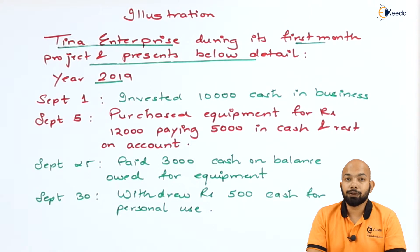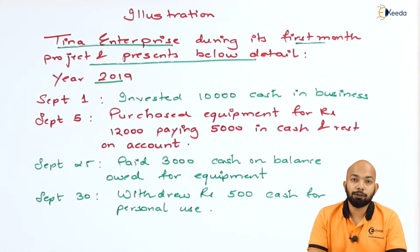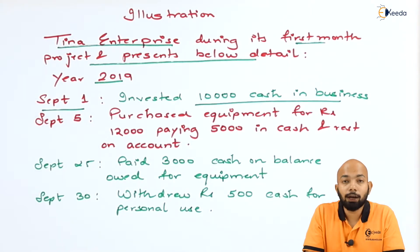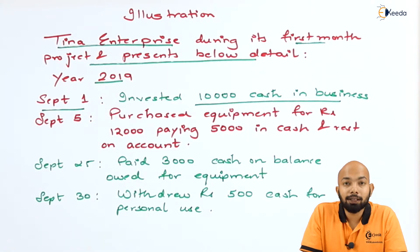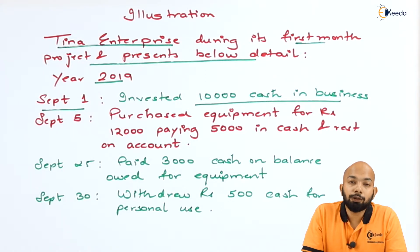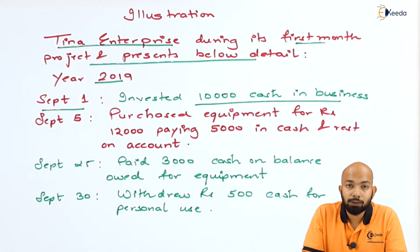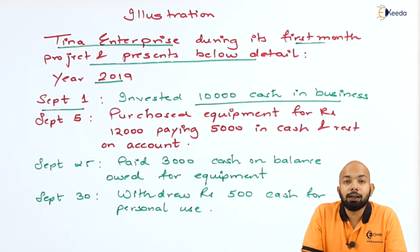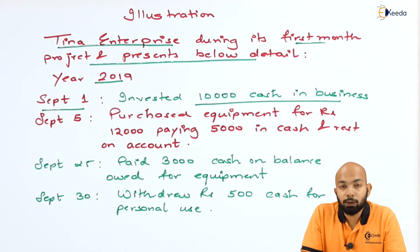The first entry refers to September 1st, 2019: invested ₹10,000 cash in business. This is the first journal entry to be passed. This refers to the creation of capital, because this is the capital invested out of Tina's own pocket.